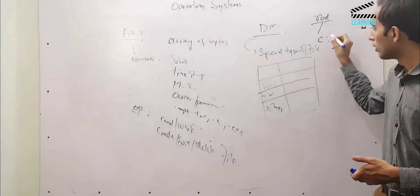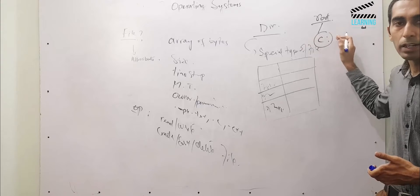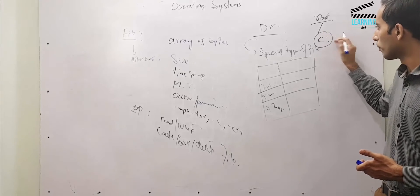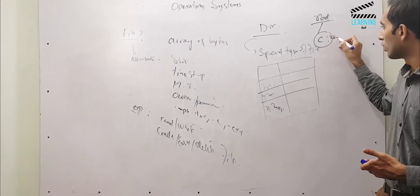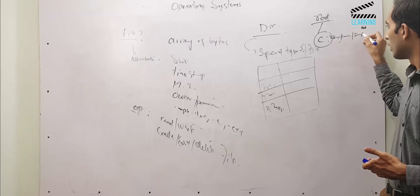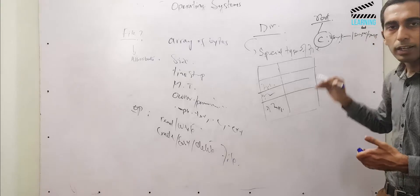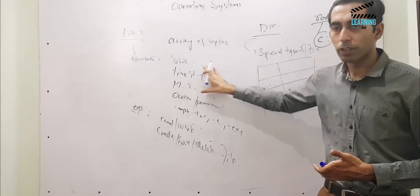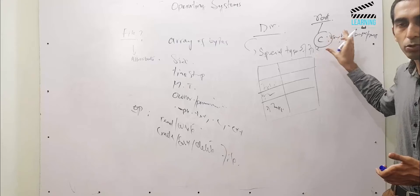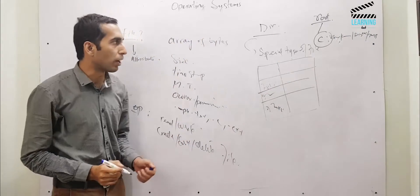Directories form a tree structure. There is a root node, and under it we have all the files and directories. For example, under the root we might have C drive, then users, then desktop and my files folder. When we access a file, we follow a pattern through this tree structure.